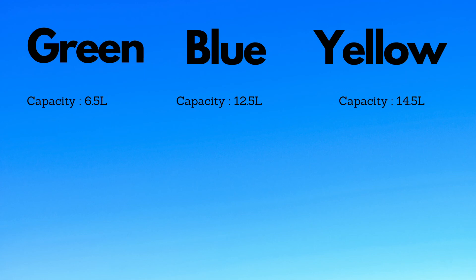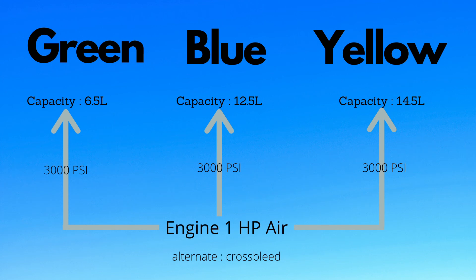Each system has its own reservoir of different capacity. Normally, high pressure bleed air from engine one pressurizes all reservoirs automatically. If the bleed pressure is too low, the system takes air from the cross bleed duct. Each system operates normally at 3000 PSI pressure.